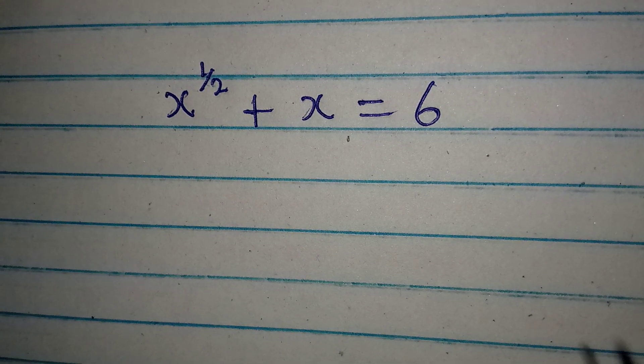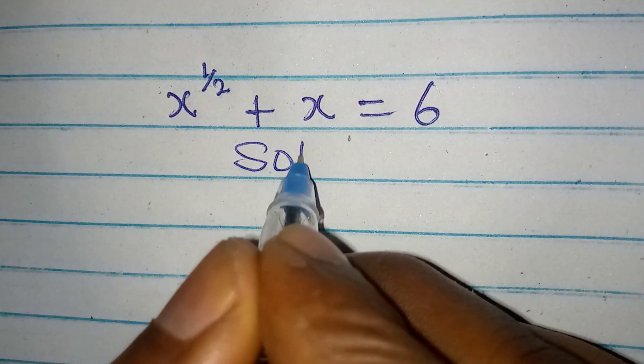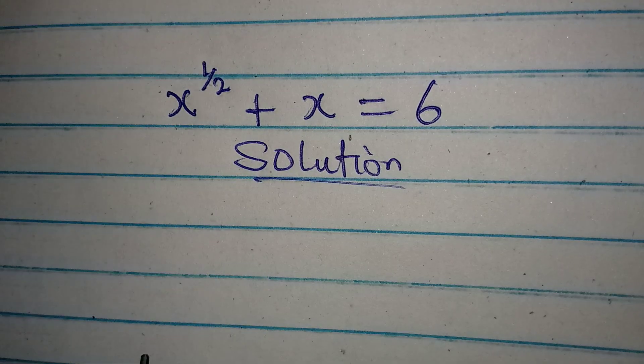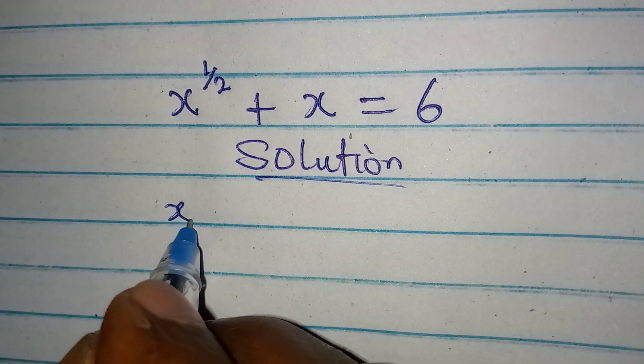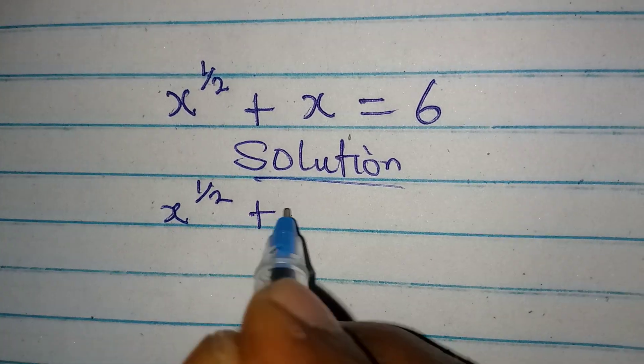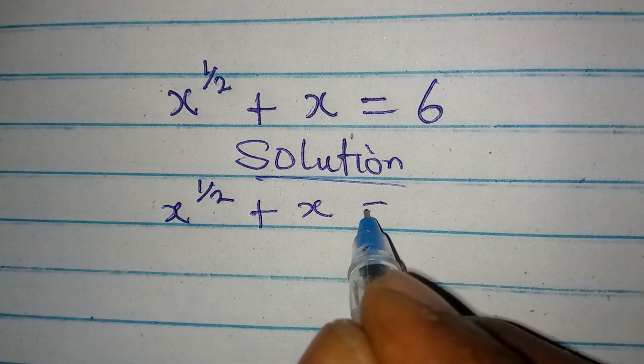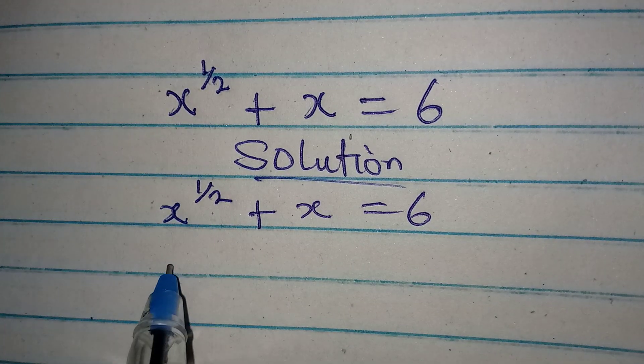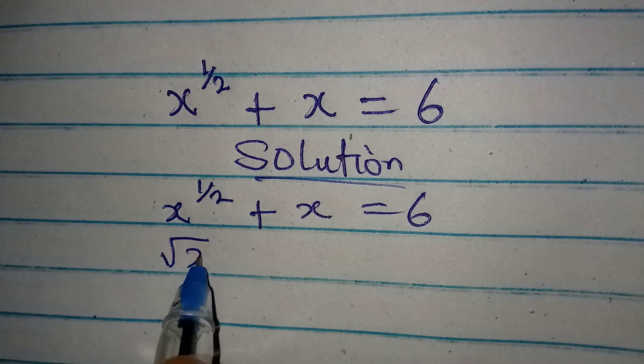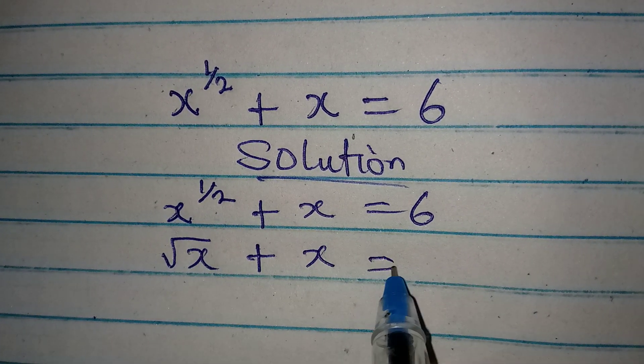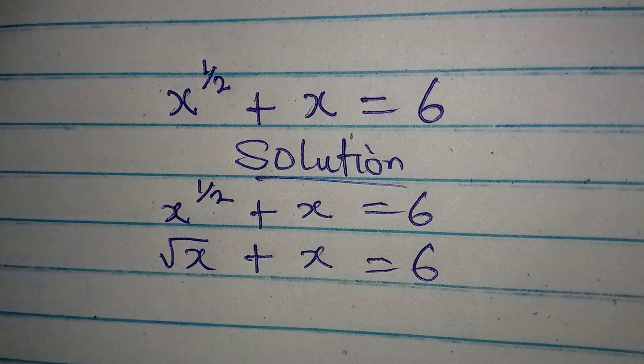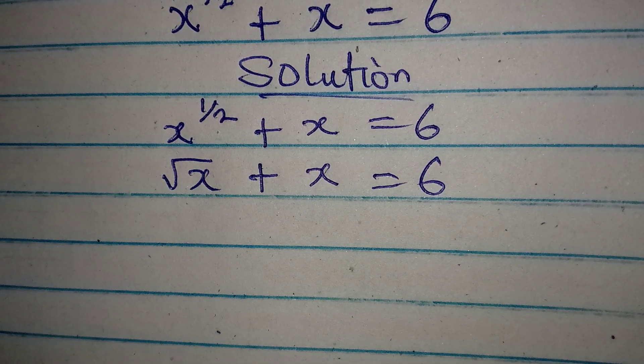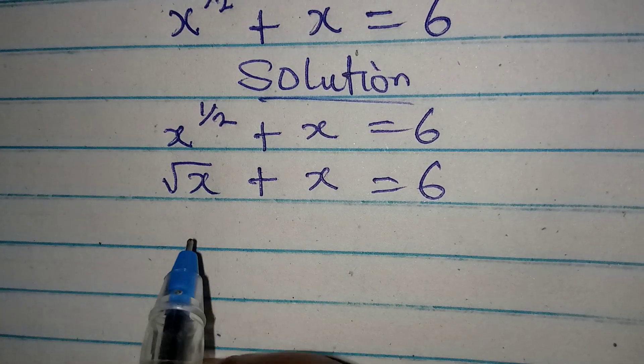Hello everyone, let's provide the solution to this problem. We have x to the power of 1 over 2 plus x equal to 6. Understand that this is the same thing as square root of x plus x equal to 6, and we want to get the value of x.